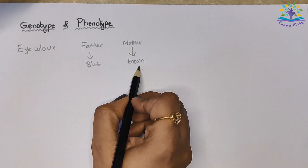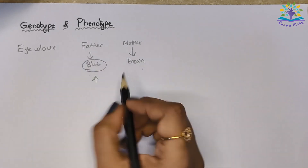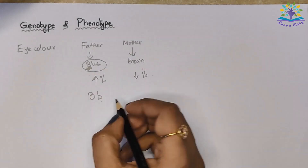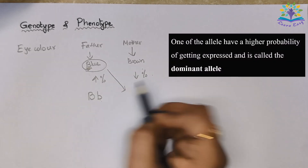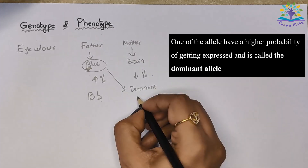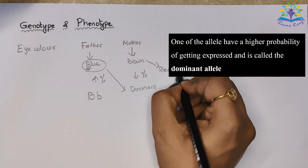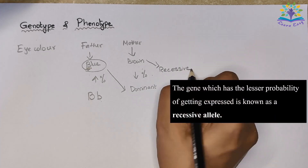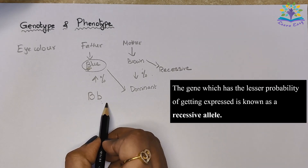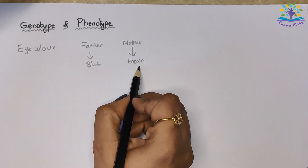So, from studies conducted by biologists and scientists, it is found that by nature, one of them has a higher probability of getting expressed and is called the dominant allele, and the gene which has a lesser probability of getting expressed is known as the recessive allele. When it comes to blue and brown eye color, blue has a higher probability of getting expressed and therefore it is dominant and brown is recessive.